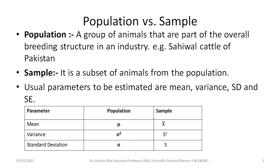First we will talk about population versus sample. Population is a group of individuals or animals which become part of the overall breeding structure in an industry — for example, Sahiwal dairy cattle of Pakistan or Holstein Friesian dairy cattle of Canada. It is usually a big size of hundreds and thousands of animals, so it is very hard to go to each and every animal and study their parameters. What we do is get a sample, which is a subset of animals from the population, and we estimate the parameters and compare them with the population or original parameters.